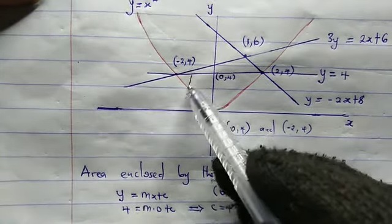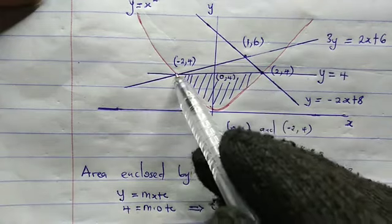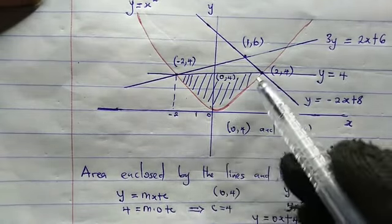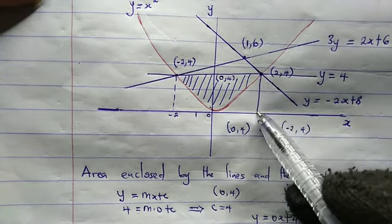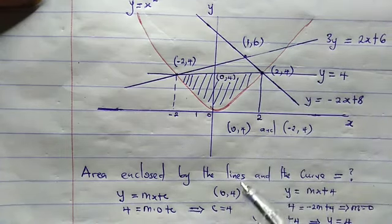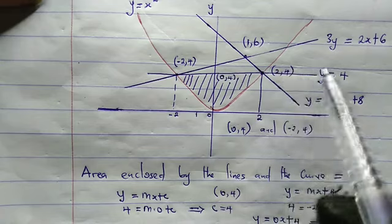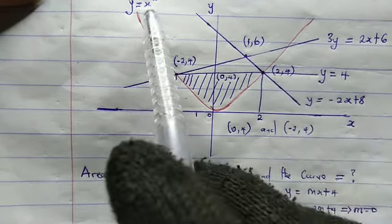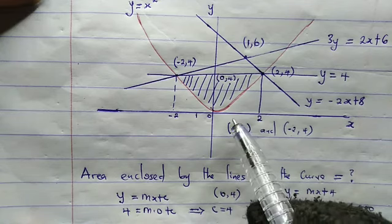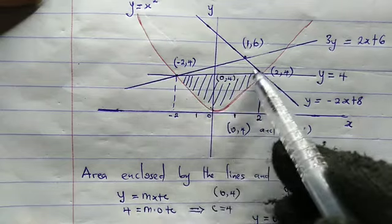To find the area enclosed by this curve and this line, we are going to integrate. On the graph, this is −2, this is 2, and this is 0. So we're going to integrate from −2 to 2 of (y = 4) minus (x squared) dx. Don't forget that this value here is 1. Now, what about the remaining parts of this region?